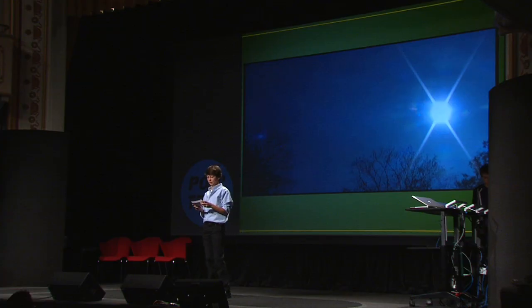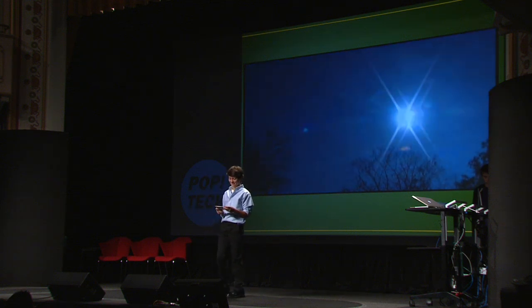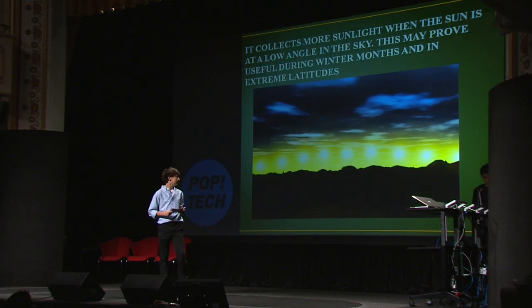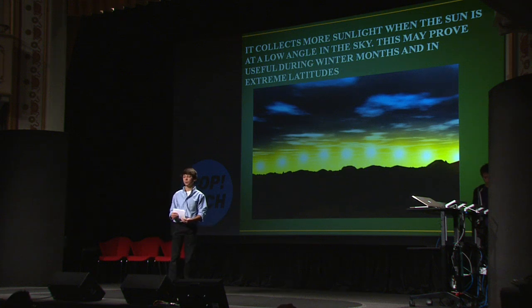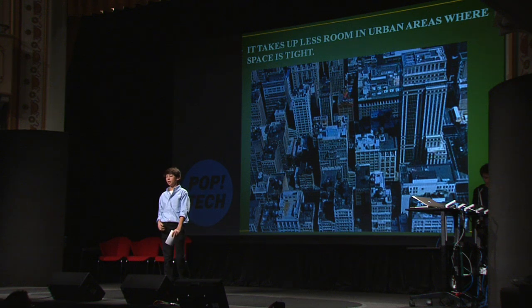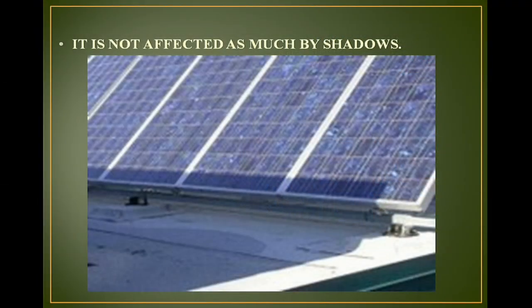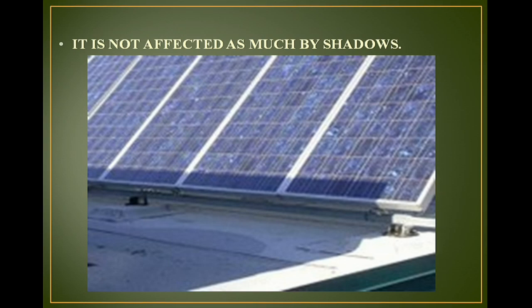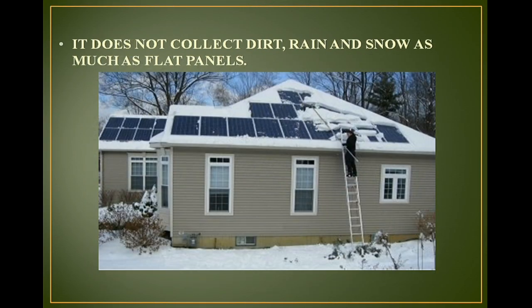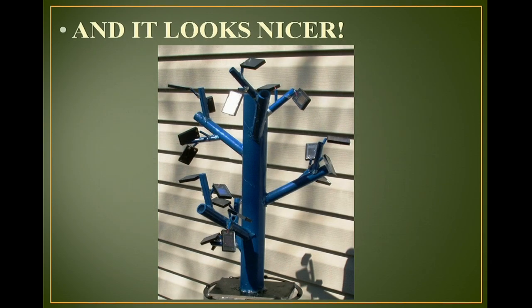I discovered the Fibonacci pattern can allow a tree to track the sun better as it moves through the sky. My results suggest the Fibonacci pattern can improve solar panel arrays in several ways: it collects more sunlight when the sun is at a low angle in the sky, which may prove useful for winter months in extreme latitudes. It takes up less room in urban areas where space is tight. It is not affected as much by shadows, does not collect rain, dirt, and snow as much as flat panels, and it looks a lot nicer.